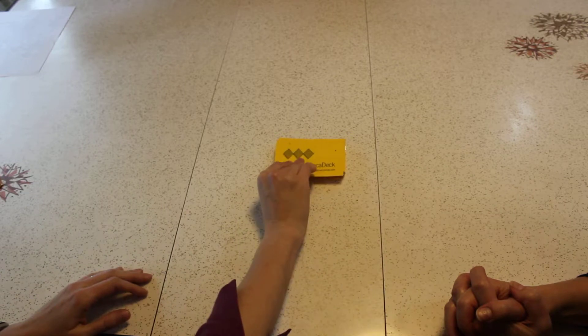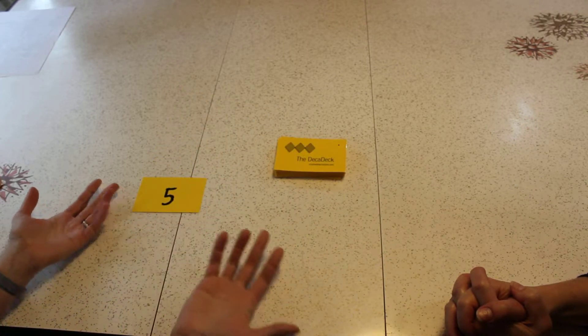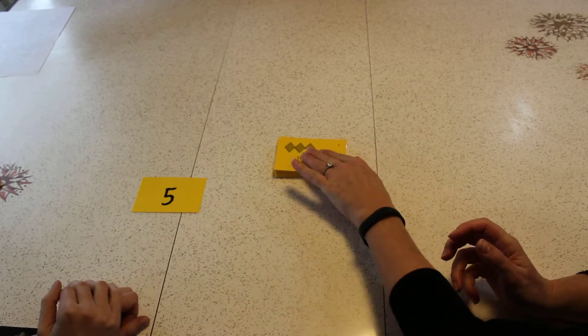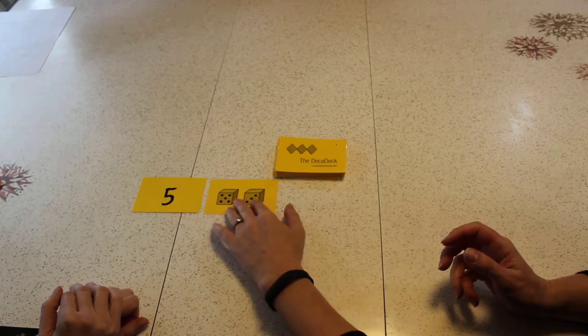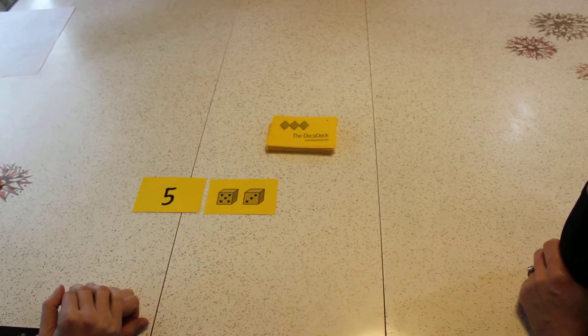Okay, I'm gonna pull a card and my goal is to make 10. 5 doesn't make 10, so I'm gonna have to wait. But you get to pull a card now and put it right next to this. Now if those two together make 10, then you get both cards.